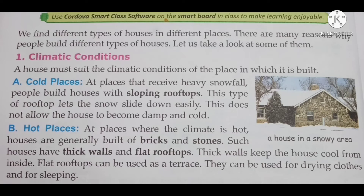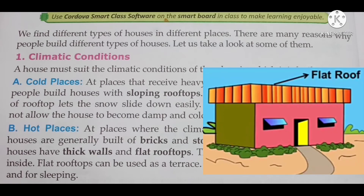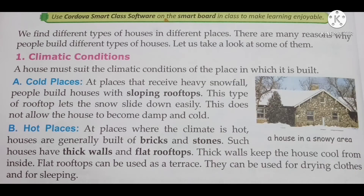Next: hot places. At places where the climate is hot, houses are generally built of bricks and stones. जहाँ की climate बहुत गर्म होती है, वहाँ ज़्यादातर ईंटों और पत्थर के घर बनाये जाते हैं। Such houses have thick walls and flat rooftops. इन घरों की दीवारें बहुत मोटी होती हैं और छत flat होती है। Thick walls keep the house cool from inside. Flat rooftops can be used as a terrace — for drying clothes and for sleeping. इनकी flat roof का use terrace की तरह किया जाता है।